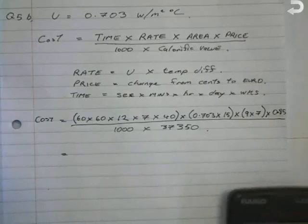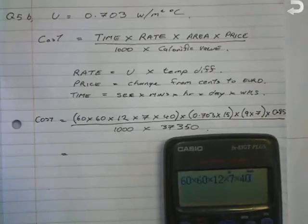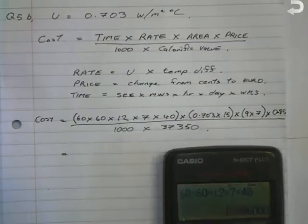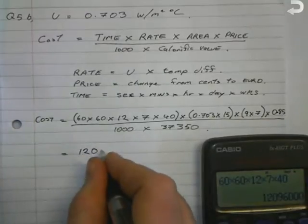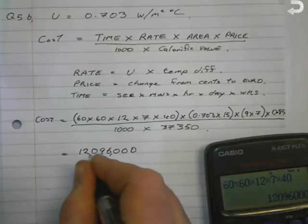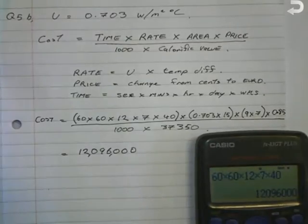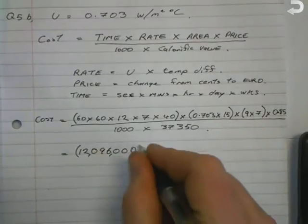Now this is all the information. The last part is to calculate it all out, and the best tip in calculating this out is to do it in sections. So we calculate the time period first. The time period is 60 multiplied by 60 multiplied by 12 multiplied by 7 multiplied by 40. You have to include the 7 - the 7 goes for 7 days. If you leave out the 7 days you're only calculating for 40 days rather than 40 weeks. So the answer we have there is 12,096,000 seconds. So that's the time period that the heating has been on for.